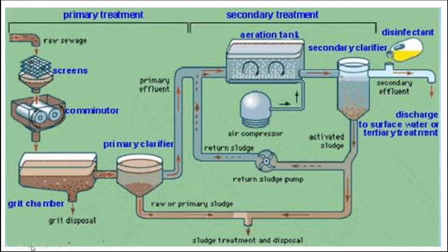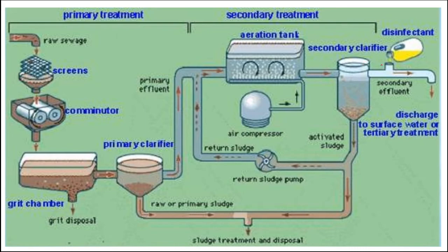This slide shows the steps of primary and secondary sewage treatment. Raw sewage passes through a screen for filtration and sedimentation, then through a grit chamber. The primary effluent is sent to an aeration tank where floc bacteria and fungi grow and consume organic matter. The secondary effluent then undergoes sludge treatment and disposal, and finally the purified water is discharged to surface water or sent for tertiary treatment.